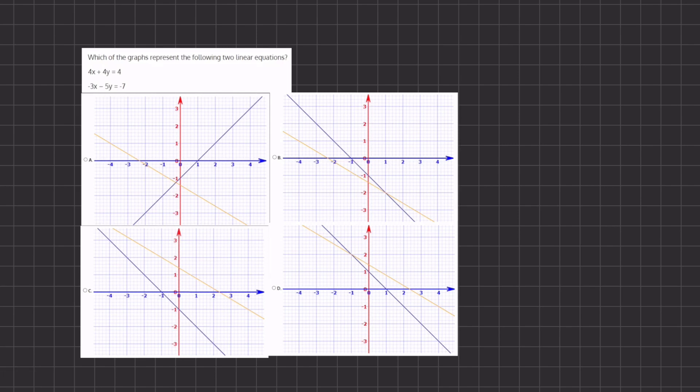Alright, so in this question we have two linear equations, and we want to see which of the following graphs represent these two functions. Now the key point in this problem is to recognize what the slope and the y-intercept is, and it will make it a lot easier to recognize the graphs.